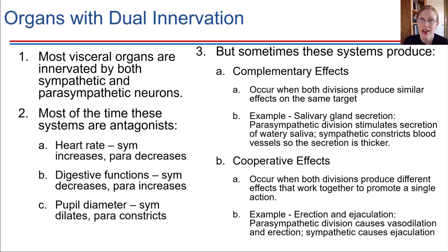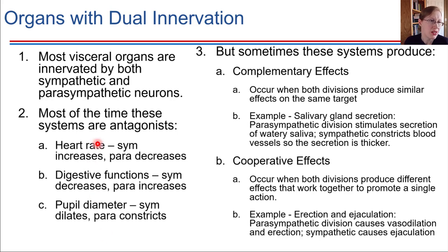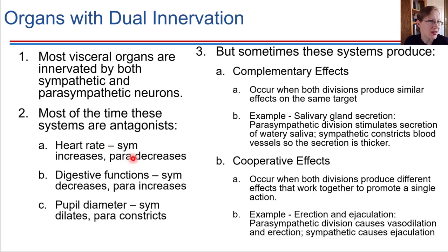Most organs have dual innervation — most organs are innervated by both the sympathetic and parasympathetic divisions. This is important because sometimes, for example with heart rate, we need to increase heart rate, which is what the sympathetic division does. Other times we need to decrease heart rate and get more relaxed, which is what the parasympathetic division does. There are a few different examples of dual innervation to consider.